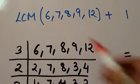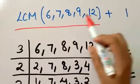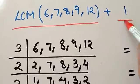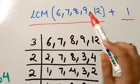Now let's follow the trick. Take the LCM of all the numbers given in our question: 6, 7, 8, 9, and 12, plus 1. This is the remainder according to our question.